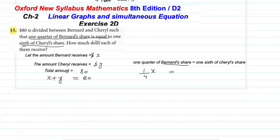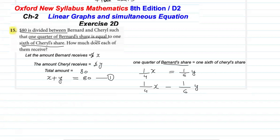Cheryl received y dollars, so one sixth means (1/6)y. Now bring the (1/6)y to the left side: (1/4)x − (1/6)y = 0. So when these two equations are formed — the first according to the first statement and the second according to the second statement — we solve them simultaneously.